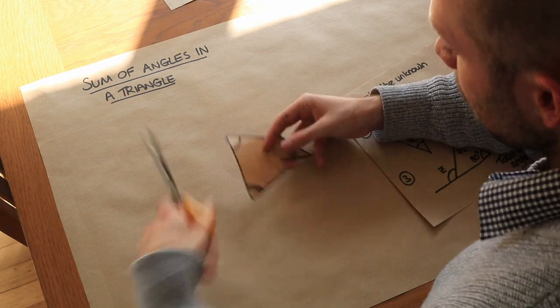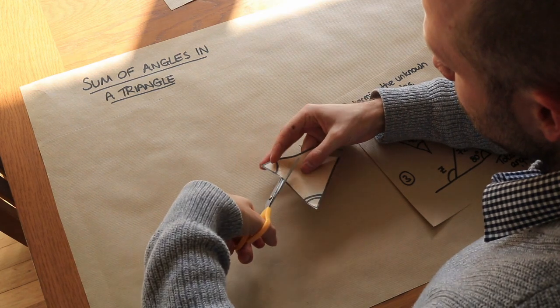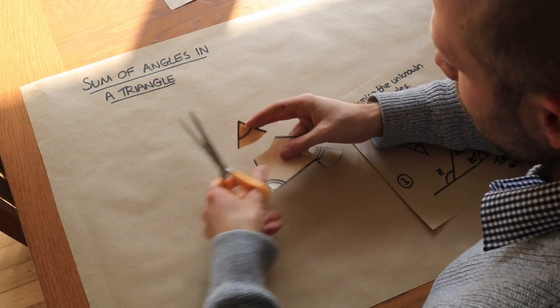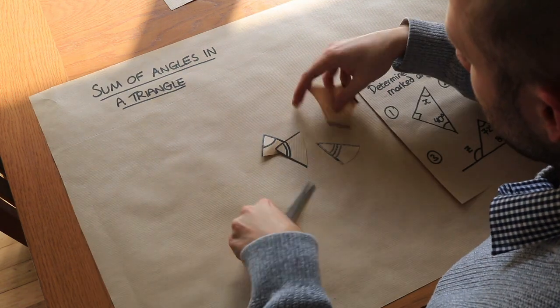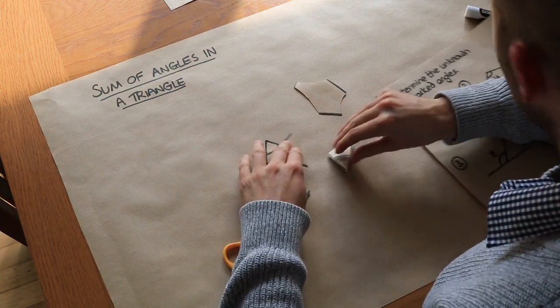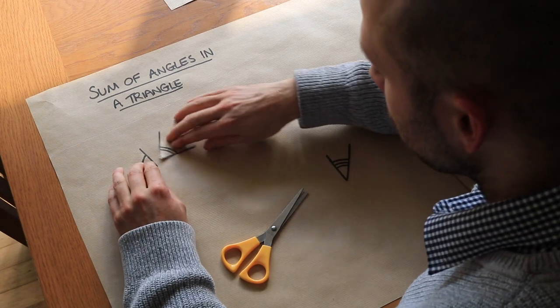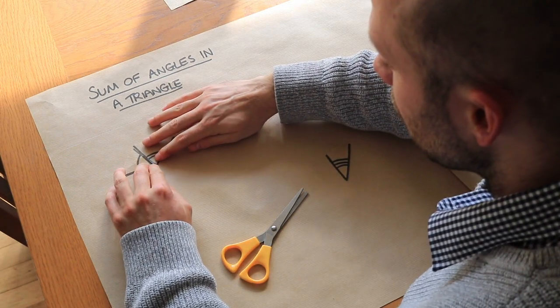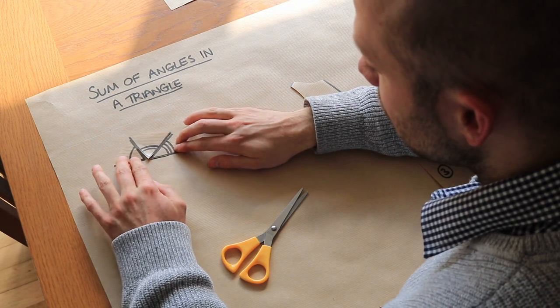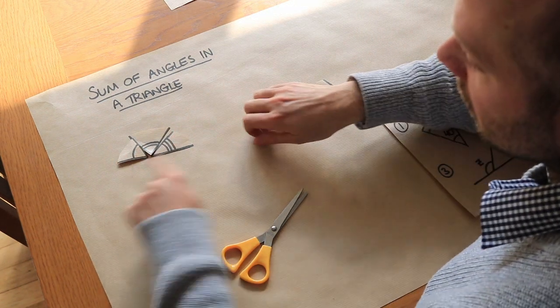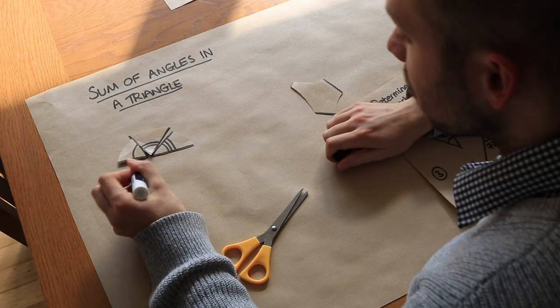So if I cut it here and then if I cut it here and I cut it here and then I rearrange these three angles. We've got this angle here, we've got this angle here and if I put this angle here can you see that these angles combined make a straight line?